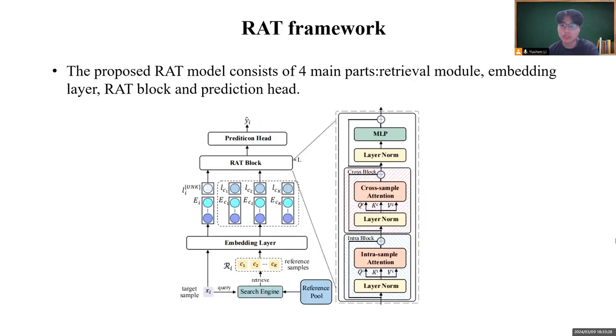The proposed RAT model consists of four main parts: Retrieval module conducts reference samples, embedding layer, RAT block to make intra- and cross-sample interaction, and prediction head to make the final prediction.